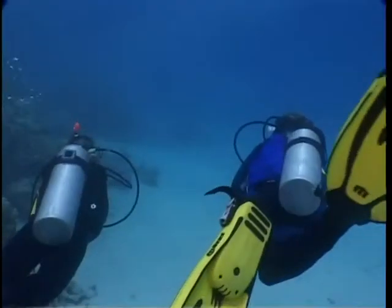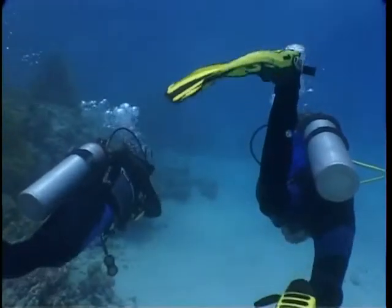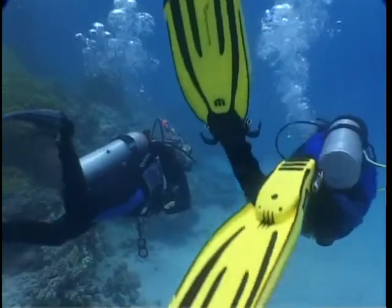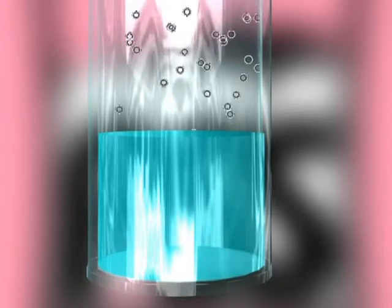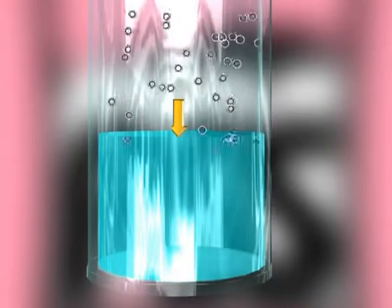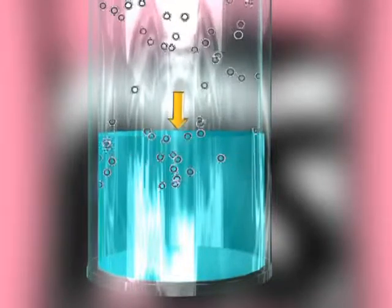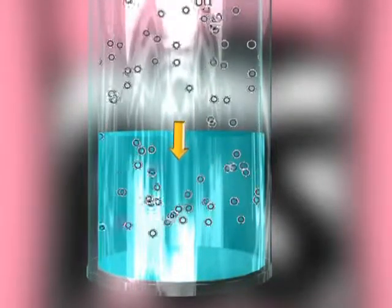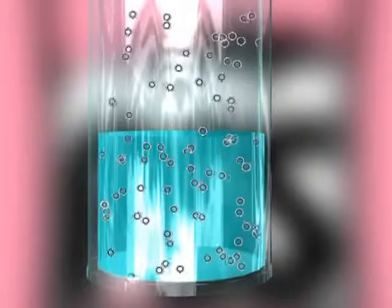Solubility of gases in liquids. Let's now look at the relationship between gases and liquids. When a gas is in contact with the surface of a liquid, some of the gas molecules pass through and diffuse into the liquid, becoming a solution, just like sugar dissolving in water.